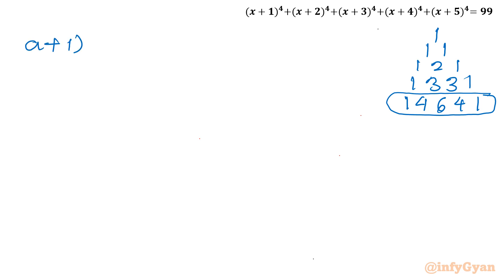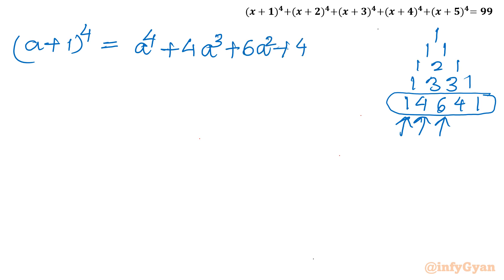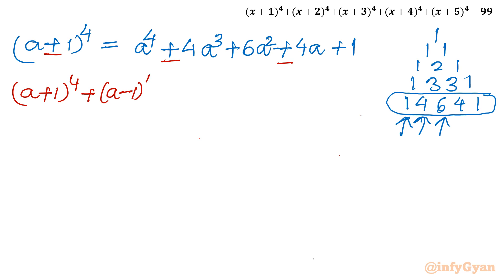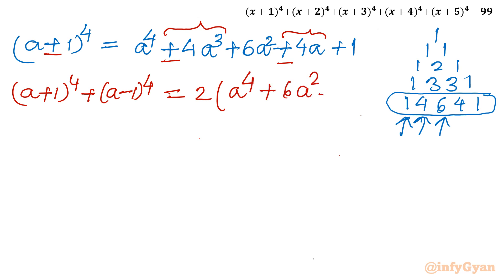Now I will write (a + 1)⁴ expanded: a⁴ + 4a³ + 6a² + 4a + 1. For (a − 1)⁴, the sign changes on the odd-power terms. Adding them together, the odd-power terms cancel and the even-power terms double: (a + 1)⁴ + (a − 1)⁴ = 2(a⁴ + 6a² + 1).